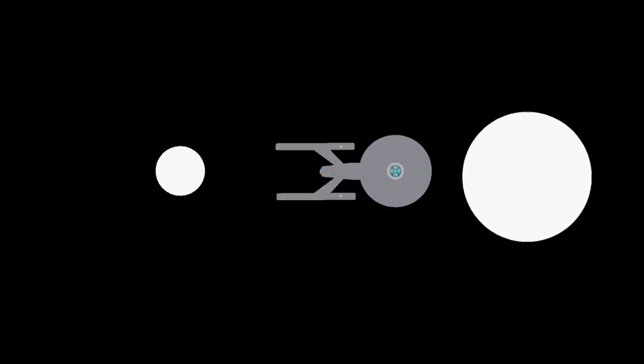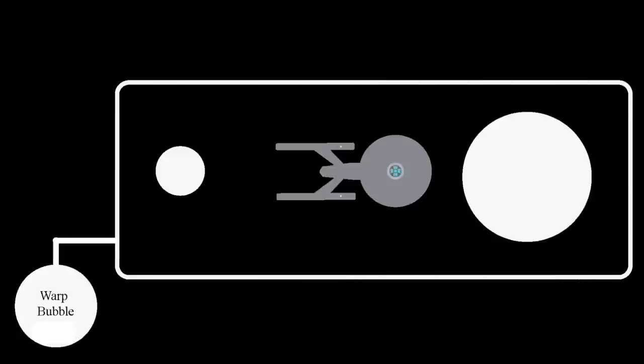...it would work by compressing the space in front of it and expanding the space behind it. The region of warp space surrounding the warp drive is called the warp bubble, which can move independently of the rest of the universe faster than the speed of light. So it's not the ship moving faster than light, it's the space surrounding the ship that is.